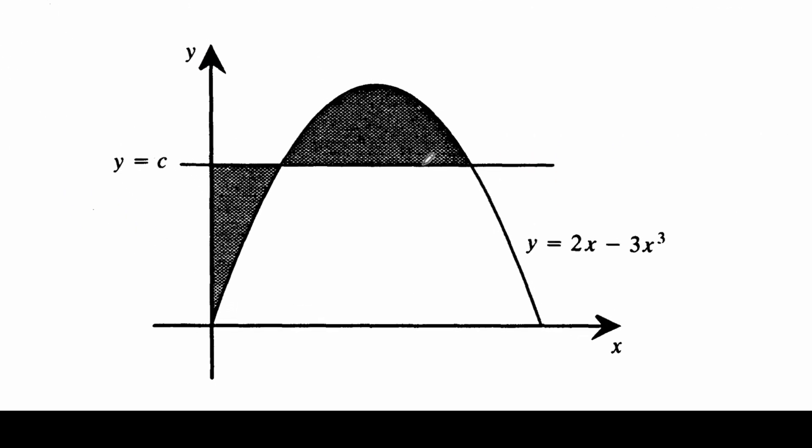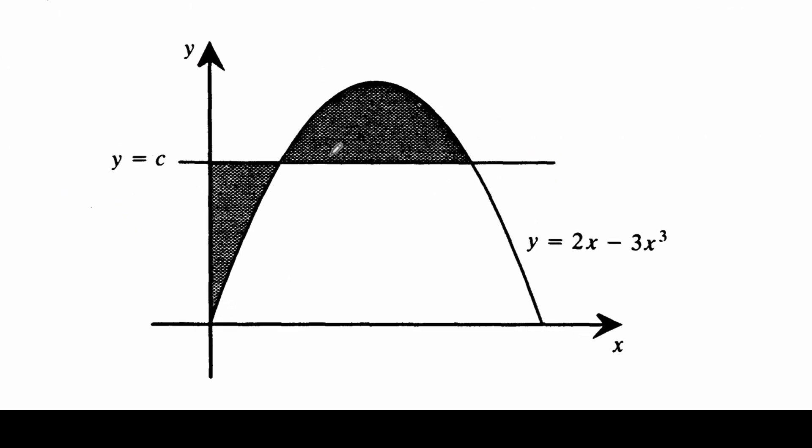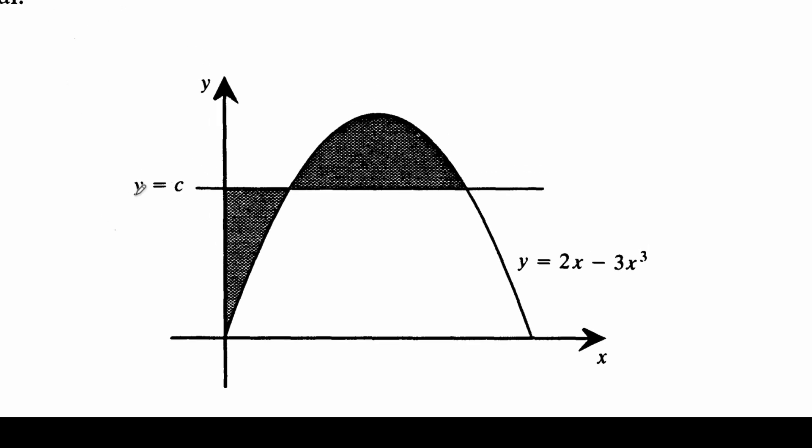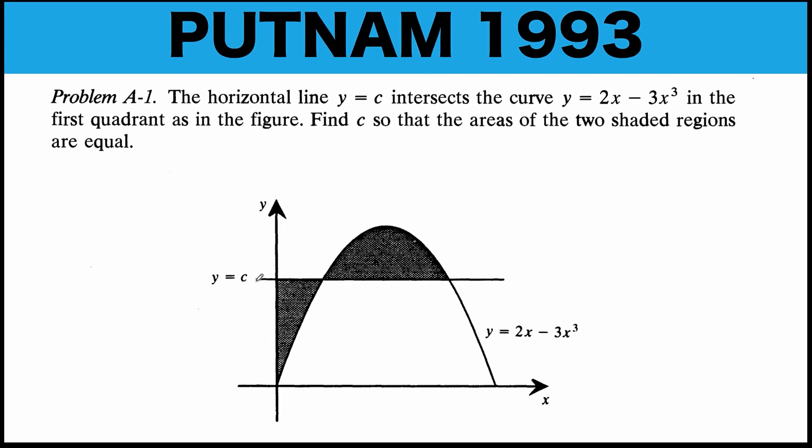A horizontal line y equals c intersects the curve y equals 2x minus 3x cubed in the first quadrant as in the figure below. Find the value of c so that the areas of the two shaded regions are equal. In other words, we would like to find what is the equation of this horizontal line that will make this area below y equals c and this area above y equals c be equal. You can pause the video and see if you can solve this difficult math competition problem.